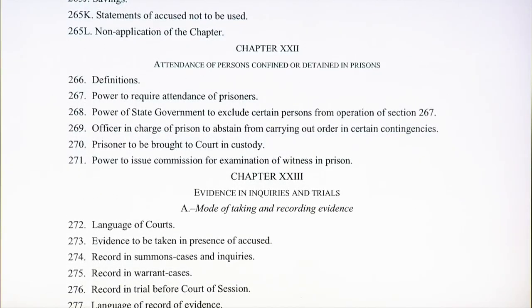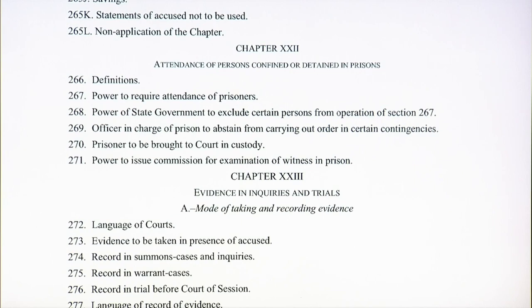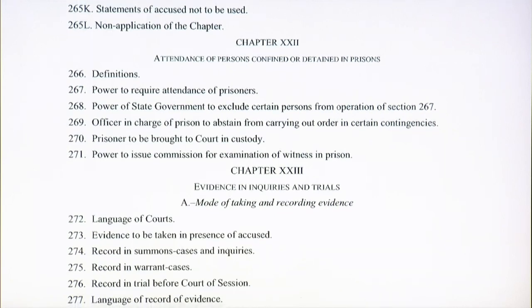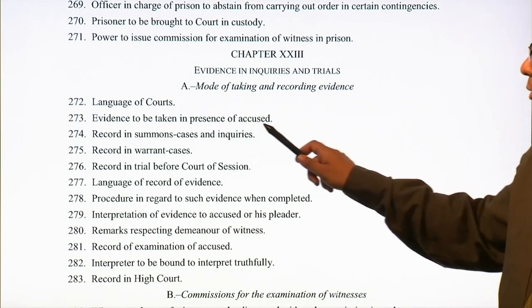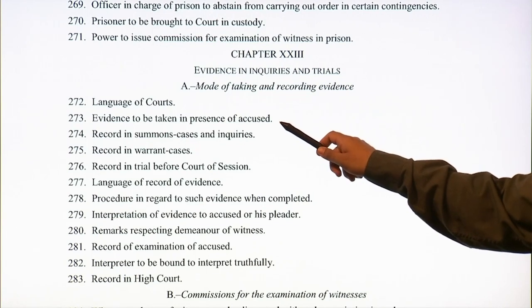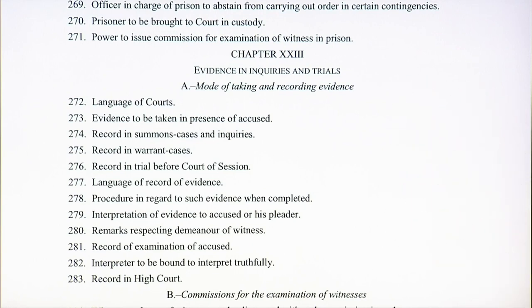Chapter 22 deals with attendance of persons confined or detained in prisons — how a person confined in prison will be called to the court and all related procedures. Chapter 23 deals with evidence in enquiries and trials — the mode of taking and recording evidence in court, the language to be used, and the requirement that evidence be taken in the presence of the accused (so he cannot later claim the evidence was taken in his absence and is biased). It covers record in summons cases and enquiries, record in warrant cases, record in trial, and commissions for examination of witnesses.